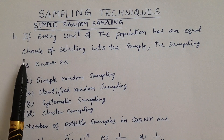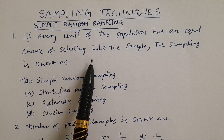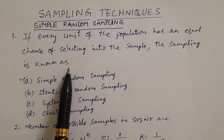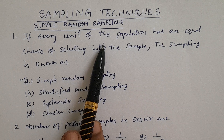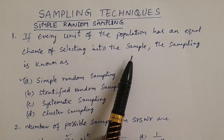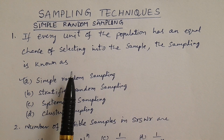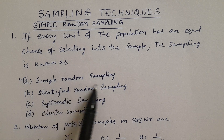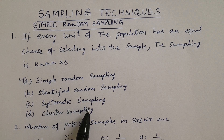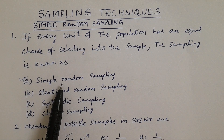Question number 1. If every unit of the population has an equal chance of selecting into the sample, the sampling is known as? Options: A) Simple Random Sampling, B) Stratified Random Sampling, C) Systematic Sampling, D) Cluster Sampling. The answer is Simple Random Sampling.